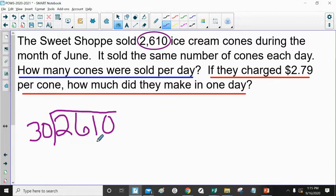So eight times 30 is 240, and when I subtract I get 21. I bring my zero down and I know 30 goes into 210 seven times.